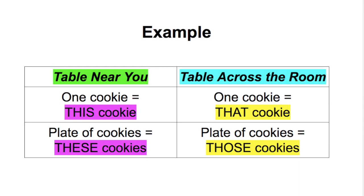Let's use this example. Picture there's a table sitting right in front of you and a table across the room from you. If there is one cookie on the table in front of you, you would say 'this cookie.' If you were pointing at the cookie on the table across the room, you would say 'that cookie.' If you had a plate full of cookies on the table right in front of you, you would say 'these cookies.' If it was a plate full of cookies on the table across the room, you would say 'those cookies.' Of course, it's not polite to point, so we wouldn't do that.